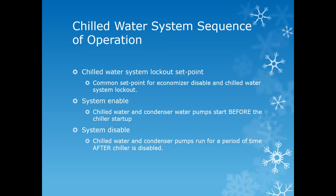Part of the chilled water system sequence of operation is the chilled water system lockout set point. That set point is a temperature value at which the chiller is either enabled or disabled. It is very helpful to set the chilled water lockout to the same value as the economizer set point of your air handlers. Whenever the chilled water system comes up we disable the economizers of the air handlers and close them to outside air to allow the system to be cooled by the chiller only. When the outside air temperature reaches or falls below the lockout set point, the chilled water system is disabled, allowing outside air to be used through the air handler to cool the building.